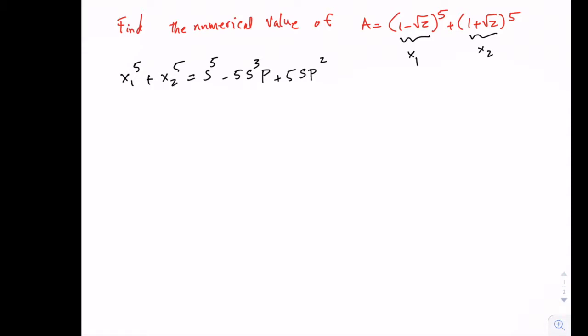We can calculate s to be (1 minus square root 2) plus (1 plus square root 2), which is 2. And p is (1 minus square root 2) times (1 plus square root 2), which is 1 minus 2, which is minus 1.